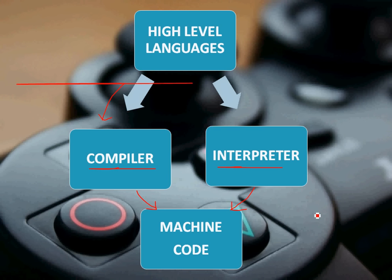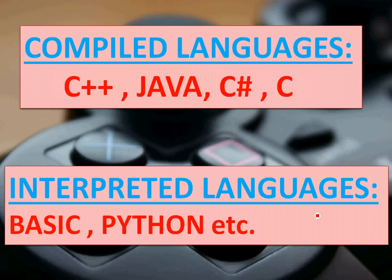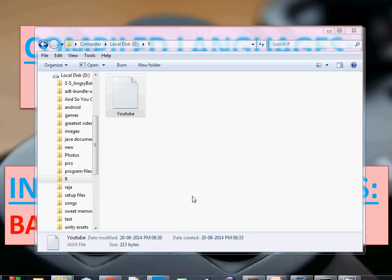Now there are compiled languages and interpreted languages. The compiled languages are most of the languages - C++, Java, C sharp, and C. On the other hand, interpreted languages are Basic, Python, etc. They use an interpreter and these languages use a compiler. Let me give you a live example of compiler and interpreter by compiling a Java program and then a Python program so that you can understand everything.